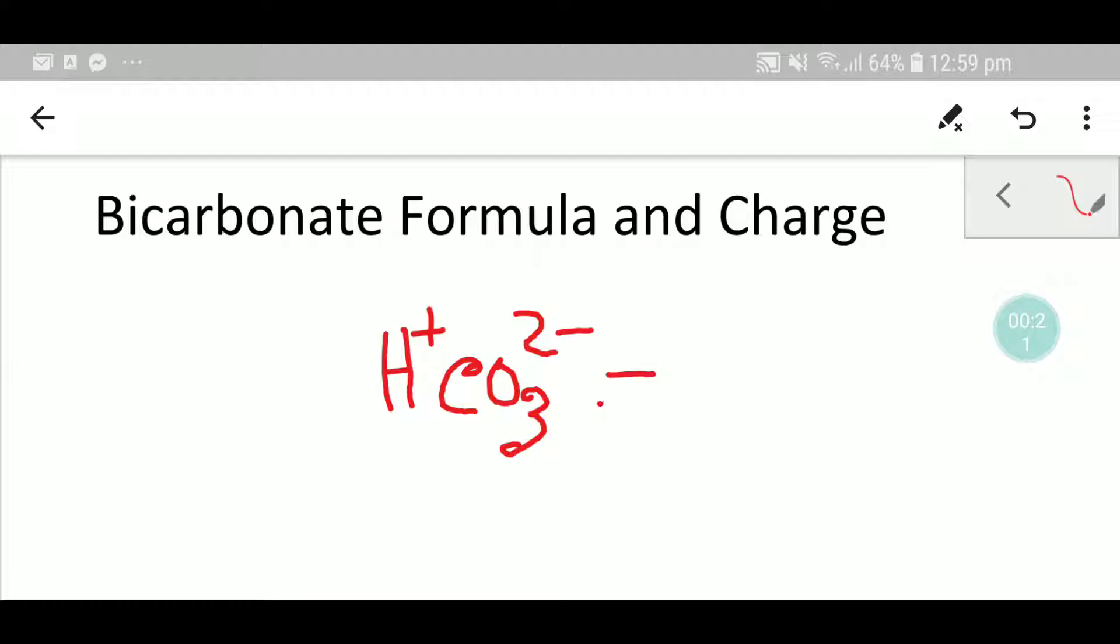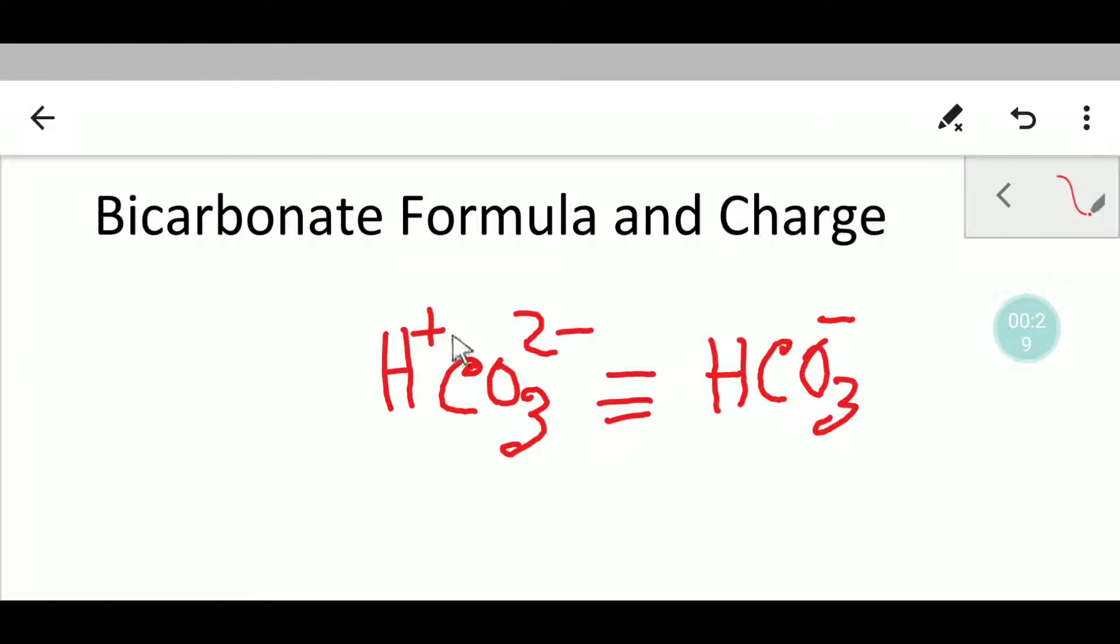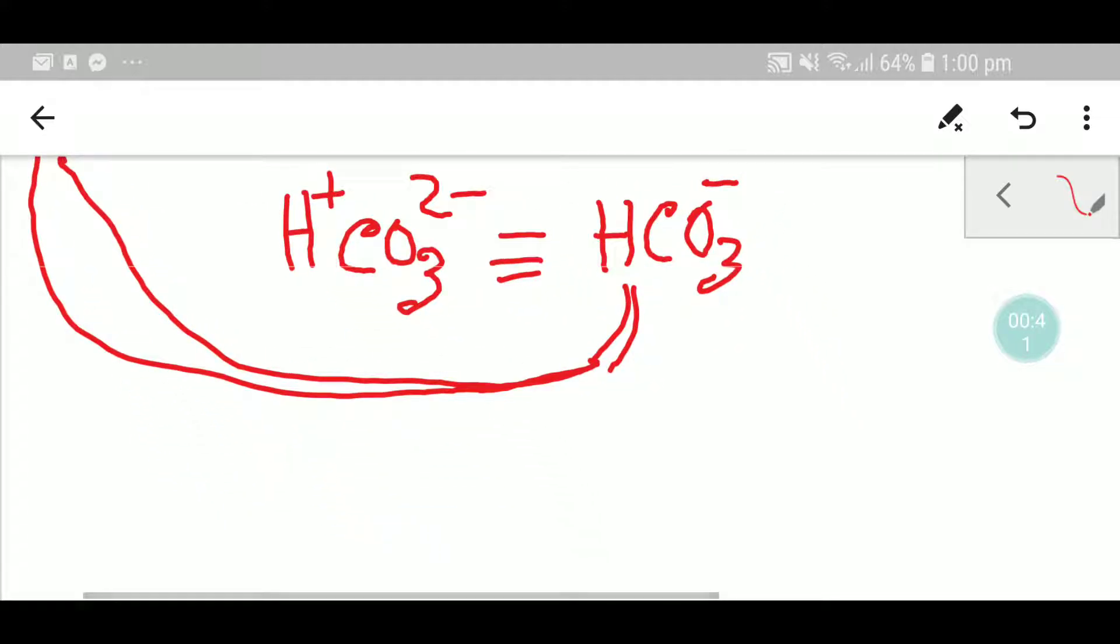You will get this: the one plus will cancel one minus and you will have one minus remaining. This is the formula of bicarbonate, HCO3^-. Let me show the structural formula of bicarbonate.